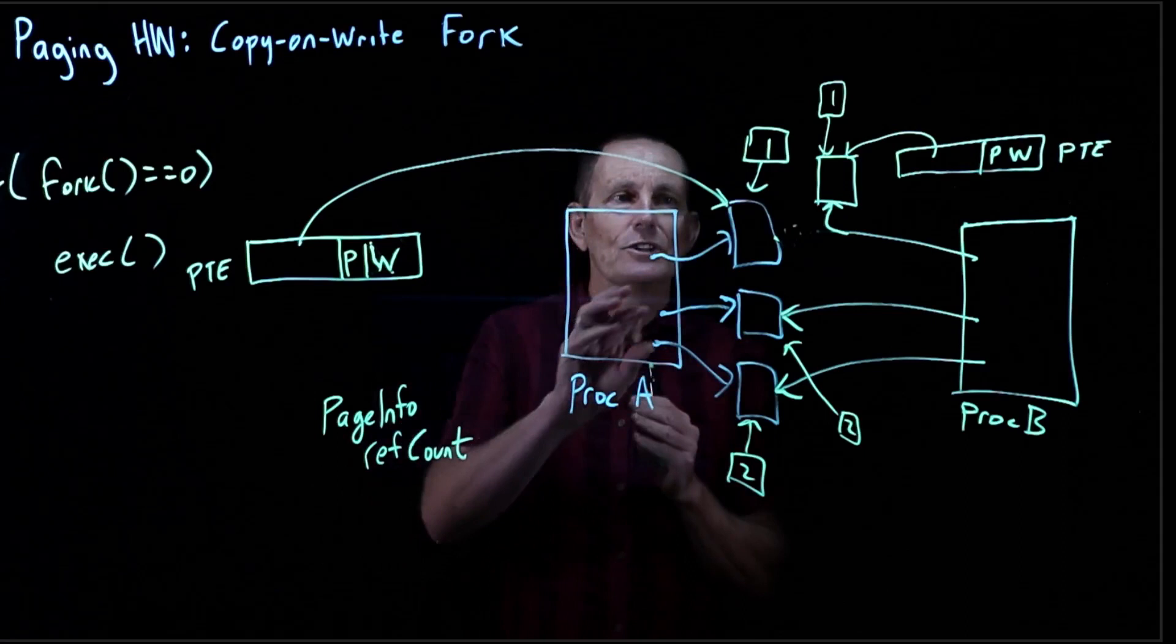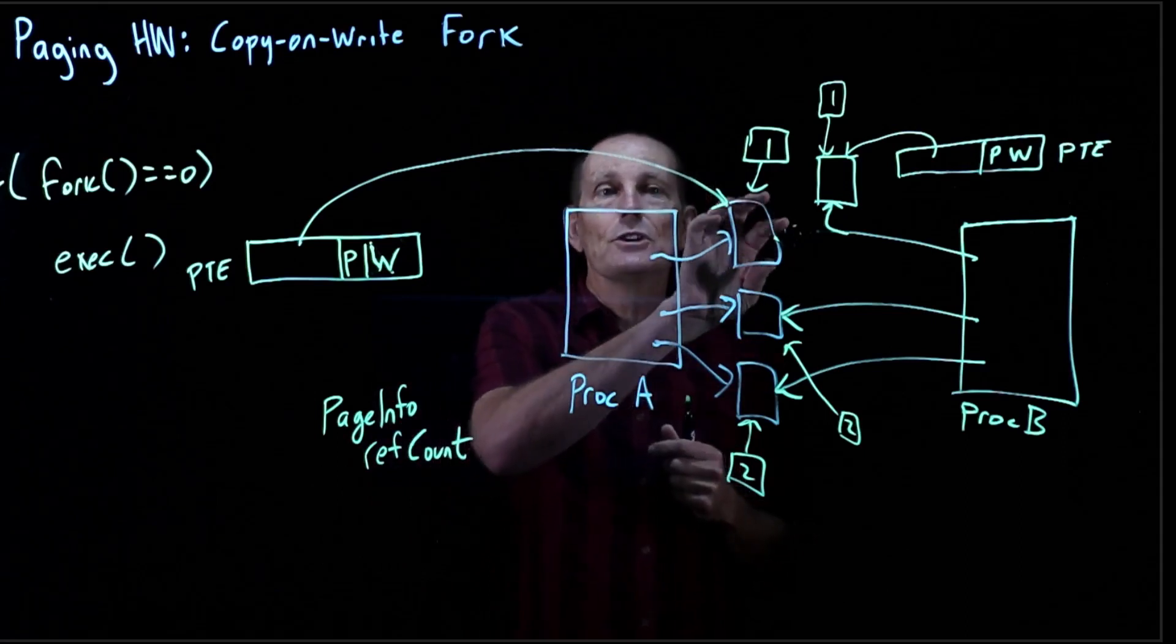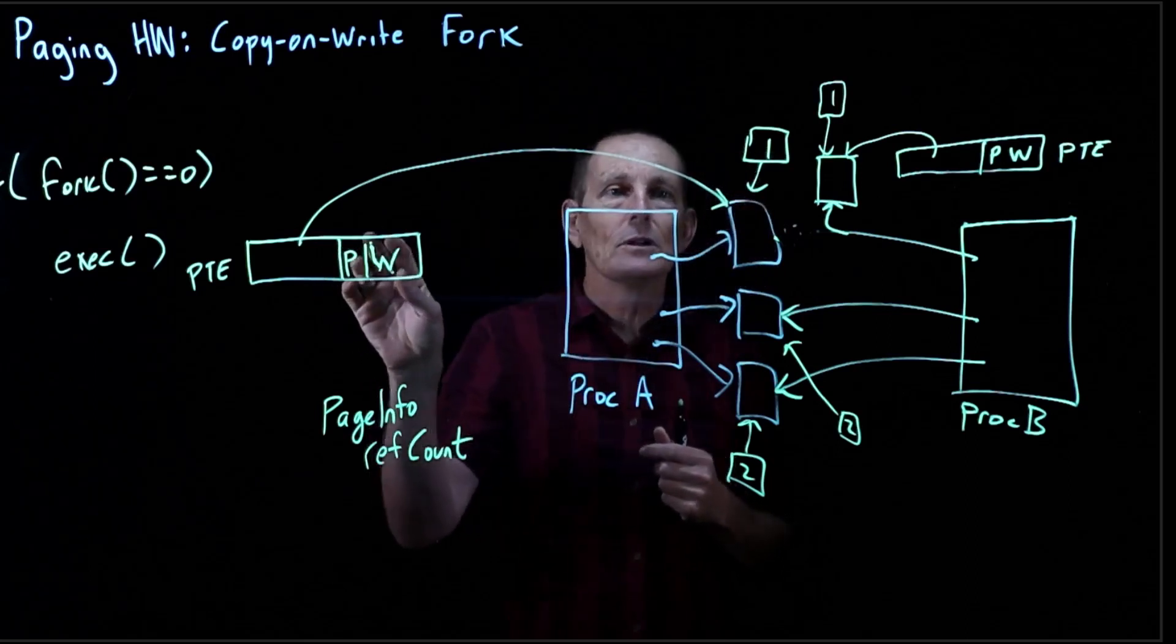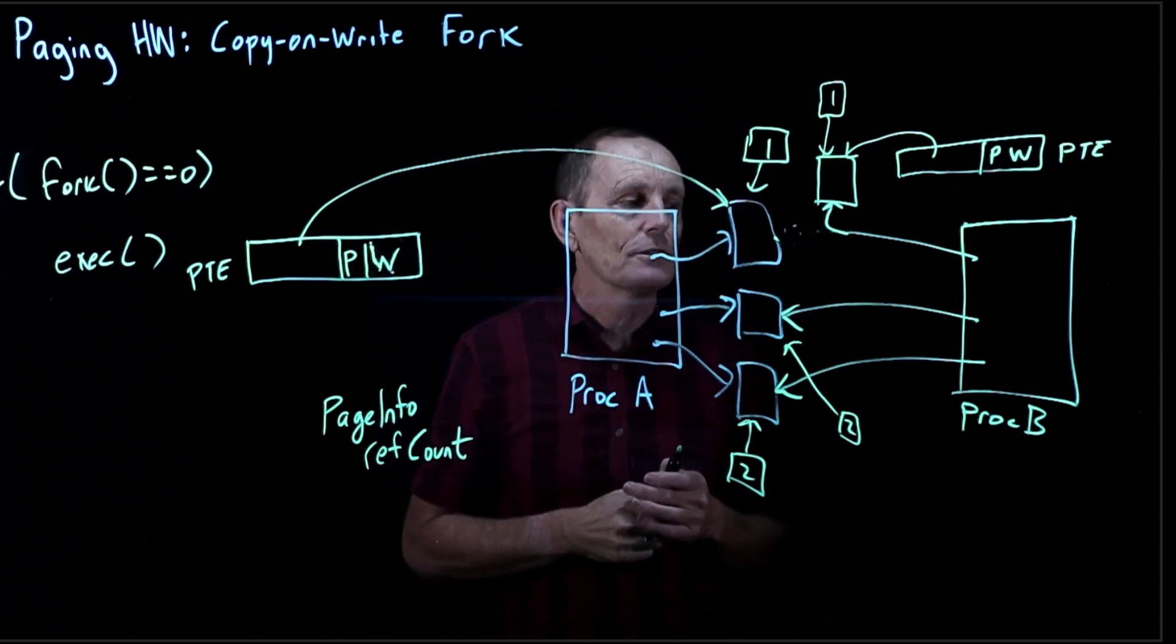We've got process A, which has still its original version of this page, because it hasn't tried to write to it yet. It's got a ref count of 1. It's writable, so it can read and write as normal. We're not getting any page faults.